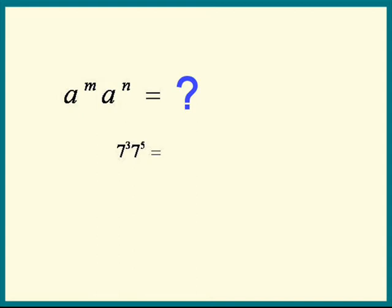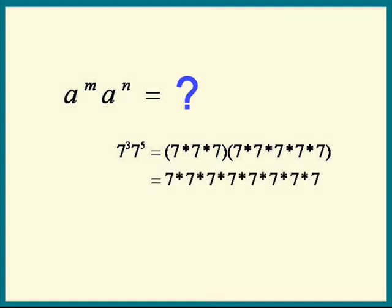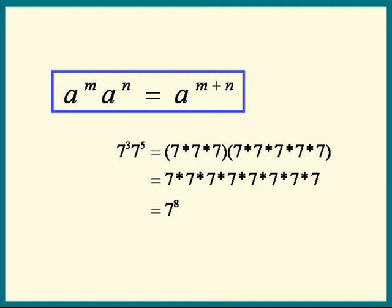Seven cubed means seven times seven times seven. Seven to the fifth means seven times itself five times. All these are multiplied together — we don't need the parentheses. So how many sevens do we have? Count them: eight. So seven to the third times seven to the fifth is seven to the three plus five, which is seven to the eighth. So when you have a to the m times a to the n, you add the exponents.